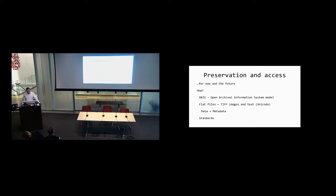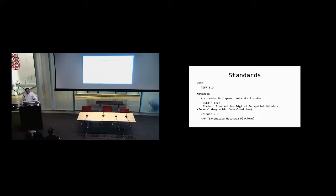The core content is flat files — TIFF images and text. Not proprietary spreadsheet or word processing documents, but files needed to preserve the data at its best quality for the longest period of time and to remain accessible. The selections in file types were made with that in mind. It is data and metadata: TIFF images are the data, and everything else is metadata that supports the images. Standards employed include TIFF version 6.0; metadata primarily based on the Archimedes Palimpsest metadata standard, drawing significantly from Dublin Core; and the content standard for digital geospatial metadata for spatial metadata describing image orientation. Unicode 5.0 for text files.